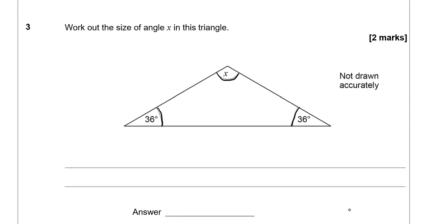Work out the size of angle x in this triangle. We know that the internal angles in a triangle add up to 180. So we know this one which is 36 and this one 36 as well. So 36 and 36 gives us 72. Now 180 take away 72.